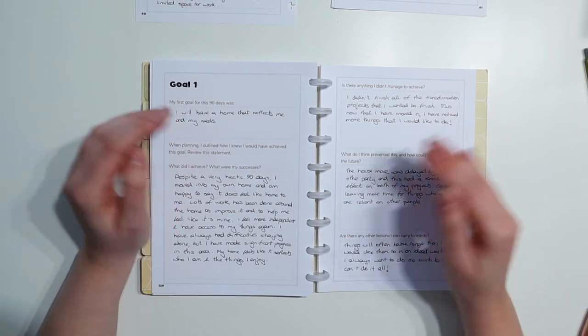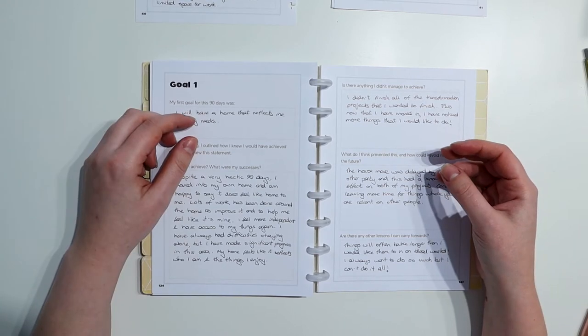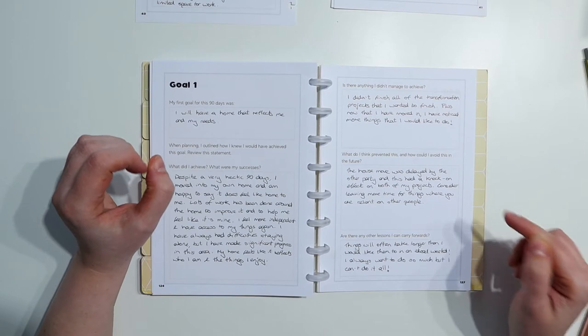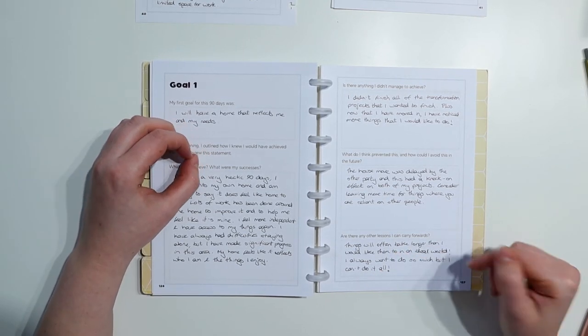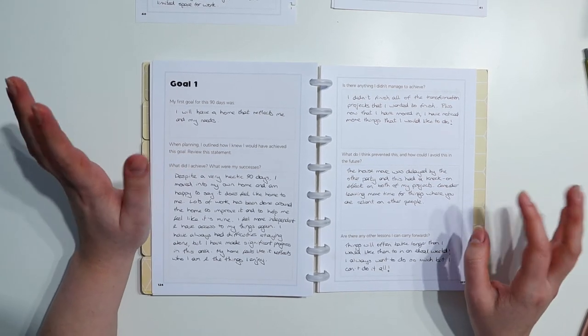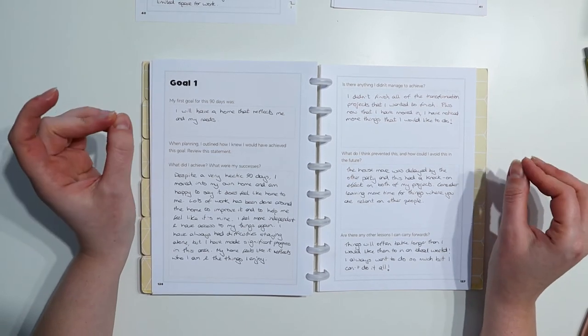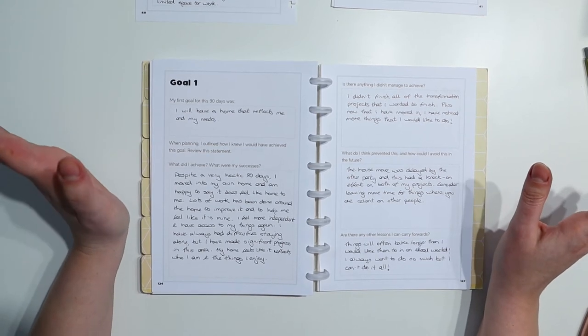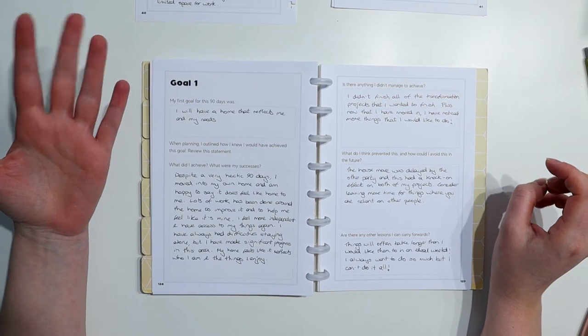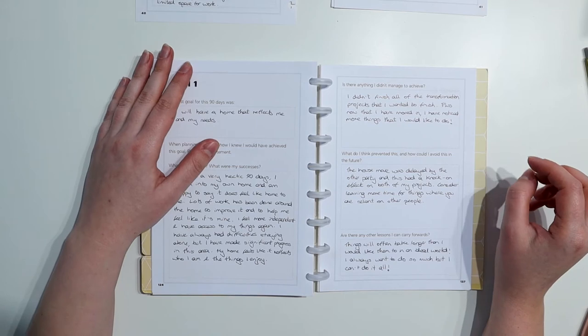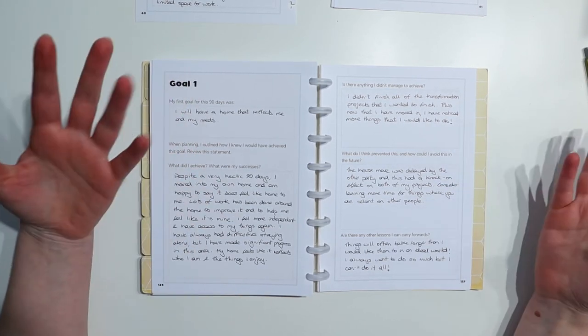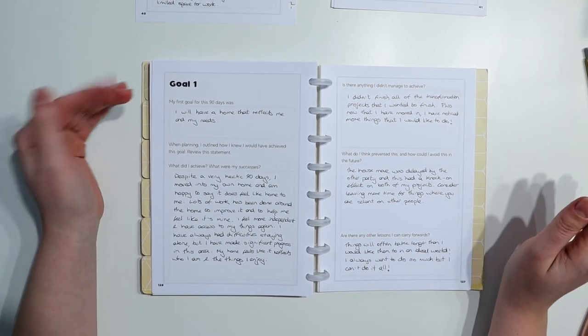So my initial plans for how I was going to set out months one, two, and three for all these projects ended up going right out of the window. But I had a big delay on the beginning in getting some of this stuff done. It just couldn't get started because I couldn't start transforming a house I didn't have. So are there any other lessons I can carry forward? And I've put, things will often take longer than I would like them to in an ideal world. I think that should probably be always, to be honest. I always want to do so much, but I can't do it all. So this is something I know, but I have to keep reminding myself. I always have so many plans, so many schemes, so many ideas of things I want to do and projects I want to undertake. And I'm just enthusiastic. I love getting stuck into a project and if I'm going to do something, I want to do it properly, which usually means I'm thinking big.